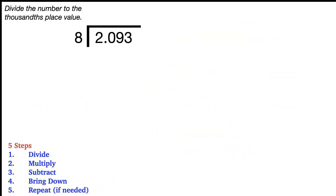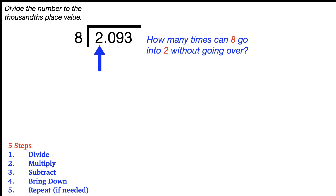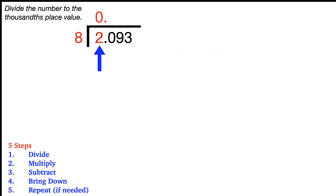Our directions for our first problem: divide the number to the thousandths place value. We'll start with the divide step. We start with the two and ask yourself how many times can eight go into two without going over. That would be zero times because eight cannot go into two. So the zero we put at the top, and let's add our decimal point right away, and we move on to the next digit, which is the zero in the tenths place value.